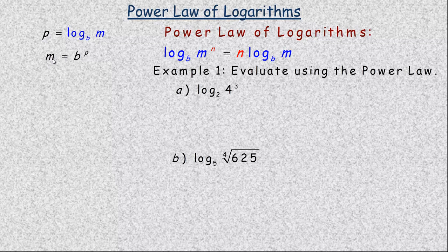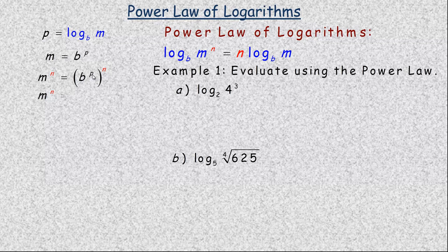Next, I'm going to take the power of n of both sides — raising m to the power of n, and b to the p also raised to the power of n. When you have a power of a power, you multiply the two exponents, so I can simplify the right side to b to the power of p times n, so pn.